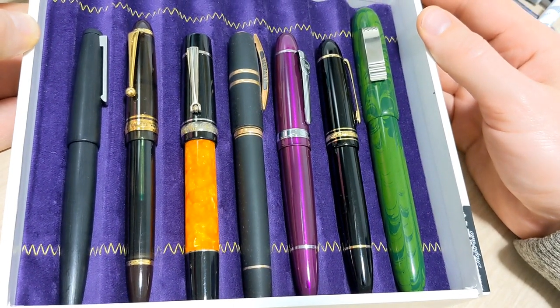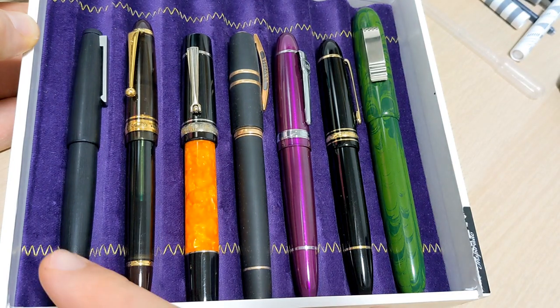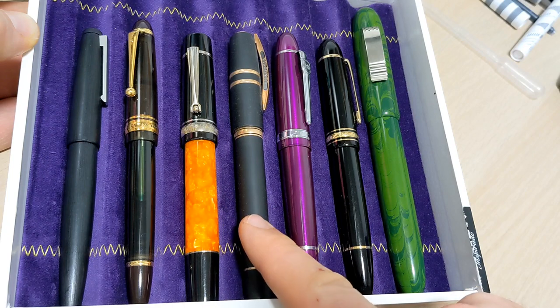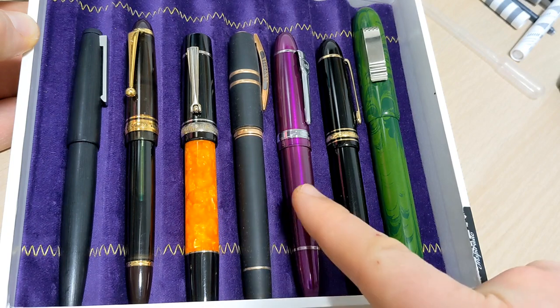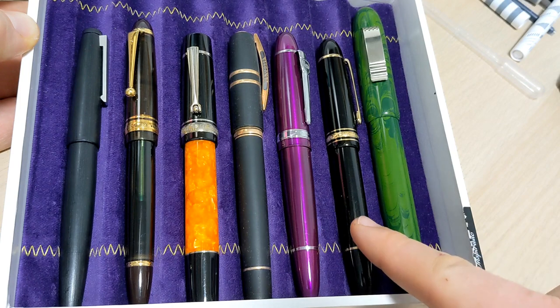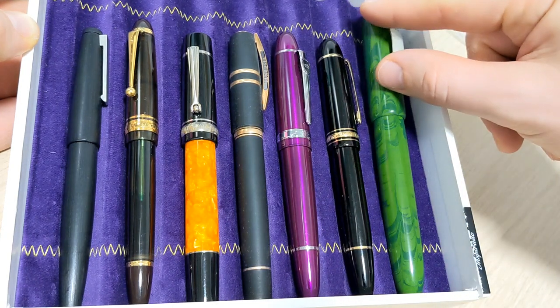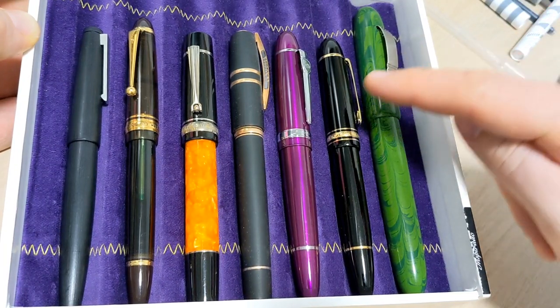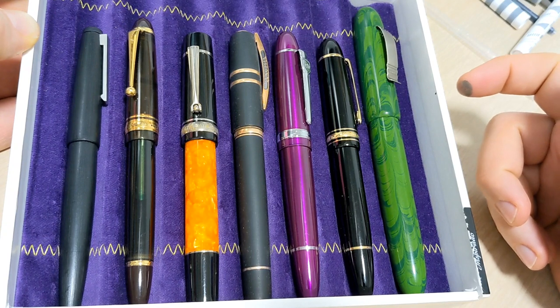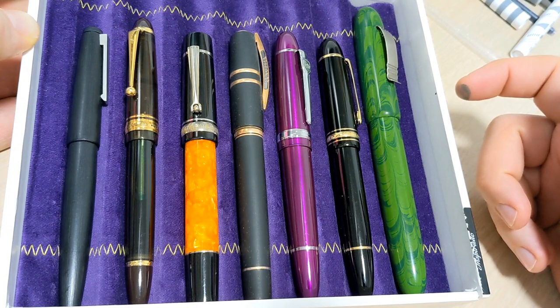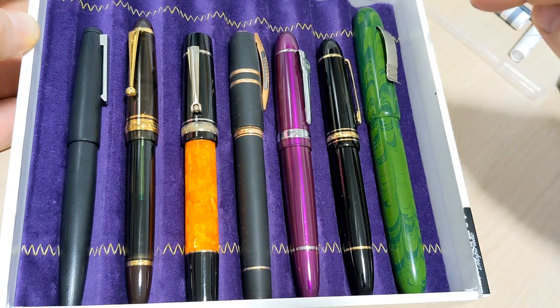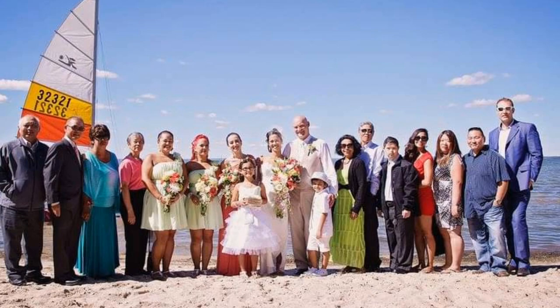So starting off on the left here, that's a Lamy 2000, Pelikan M23, Delta Dolcevita, Visconti Homo Sapiens, Maxim, Jinhao 159, Montblanc 149, and then this beast of a pen. So this pen is giant and it's sort of grown on me a little bit. When I did this comparison it reminded me of a picture of me at a wedding. I'm a big guy, I'm like 6'6", 260-ish, 265. I stick out pretty good. And so when I did this lineup here it kind of reminded me of that picture of me at a wedding, which you know, you can just see how big I am.